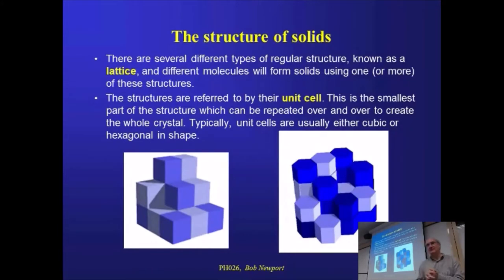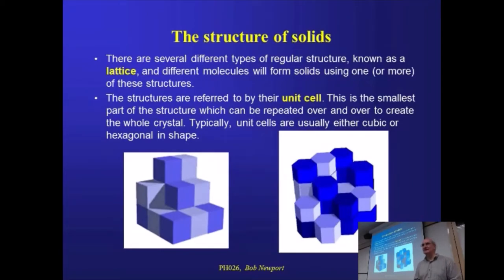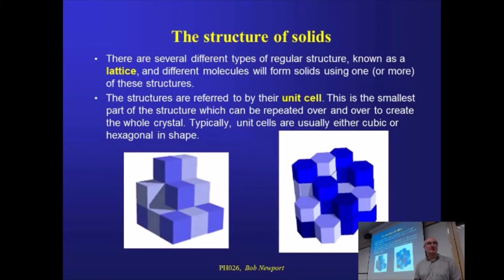There are lots of different types of crystal structure. We're only going to look at a few basic principal ones. But they all have in common a couple of terms. One is the lattice — the lattice is simply the framework on which the atoms sit, the defining structure of the crystal. What sort of lattice is it? Is it cubic? Is it hexagonal? Think of this as the framework for the whole thing.